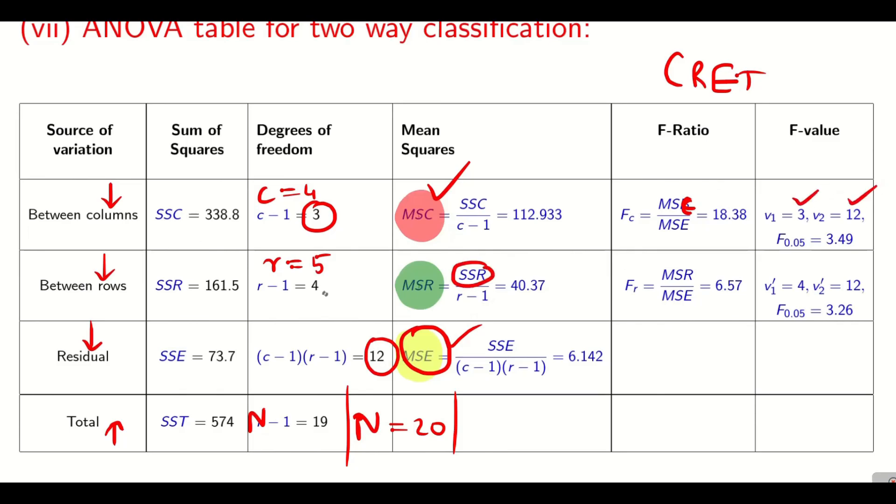Similarly for the row, here MSR is 40, MSE is 6. So MSR by MSE. So I am taking the new degree of freedom V1 dash, it is going to be 4. And V2 dash, it is going to be 12. Now you can go to the table, and you can find the values of FC and FR. And you can find the corresponding table values.